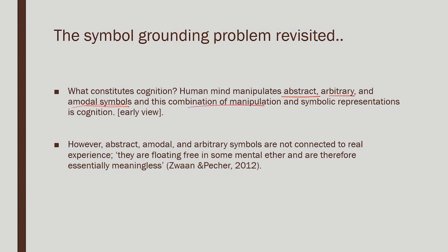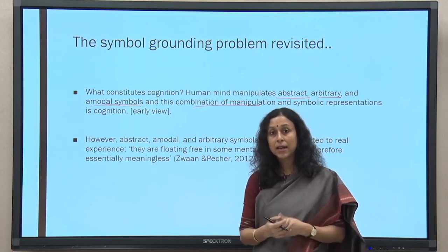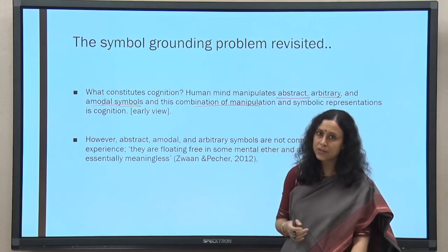That is basically the early view of what is called disembodied cognition. However, the problem with this idea is that abstract, amodal, and arbitrary symbols are not really connected to real experience. They are abstractions of what has happened. An image schema is just the skeleton of an experience and does not have much connection with real experience. Real experience is far more varied, with many more angles and modalities attached to it.